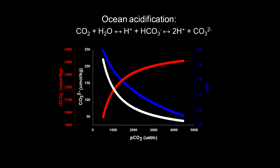As we know, levels of CO2 are rising in the atmosphere, and that CO2 in turn dissolves in surface waters and equilibrates with existing carbonate species. The net result of rising atmospheric CO2 levels: we increase CO2, pH declines — hence acidification — as well as reduced carbonate ions and increased bicarbonate.